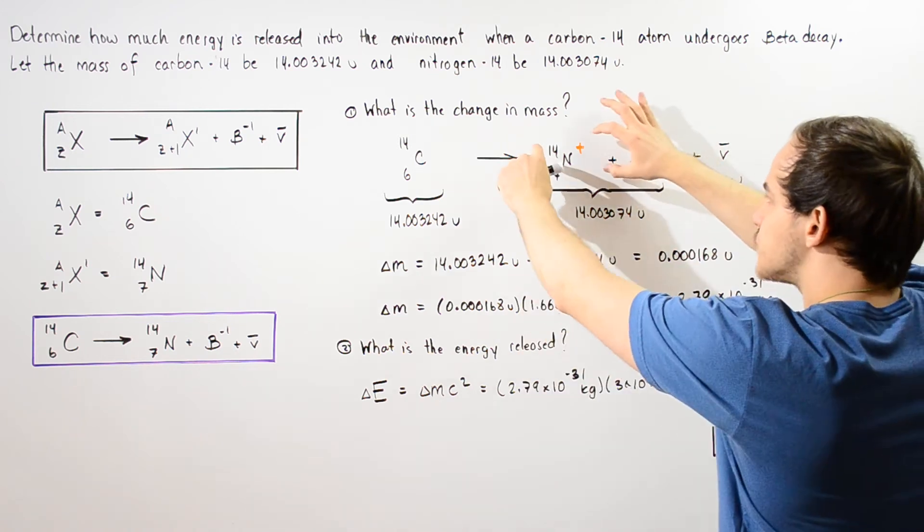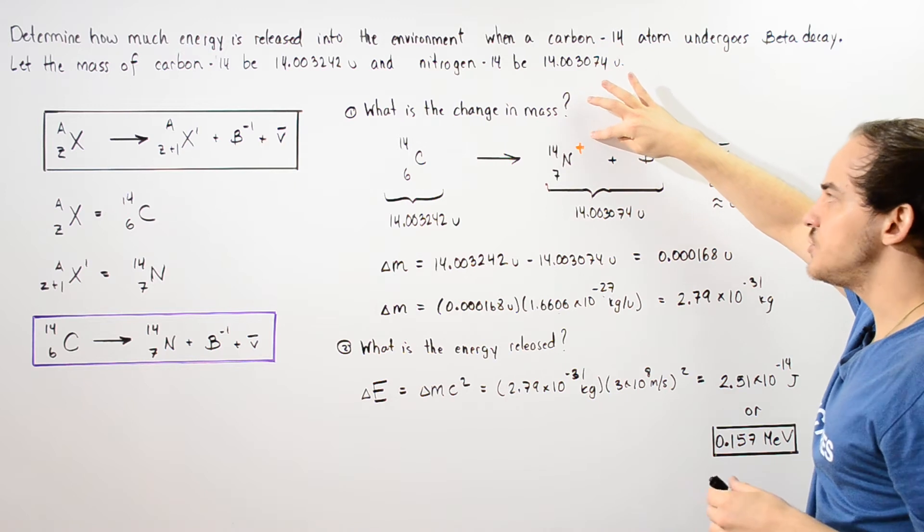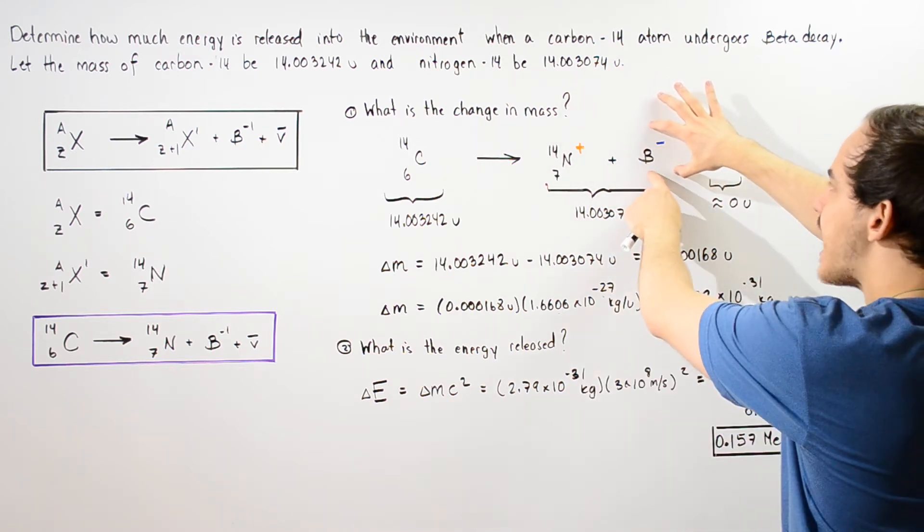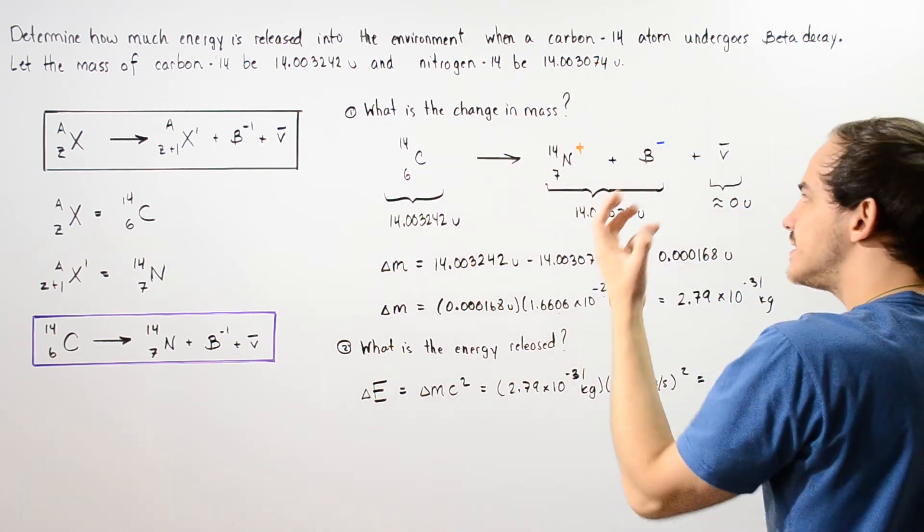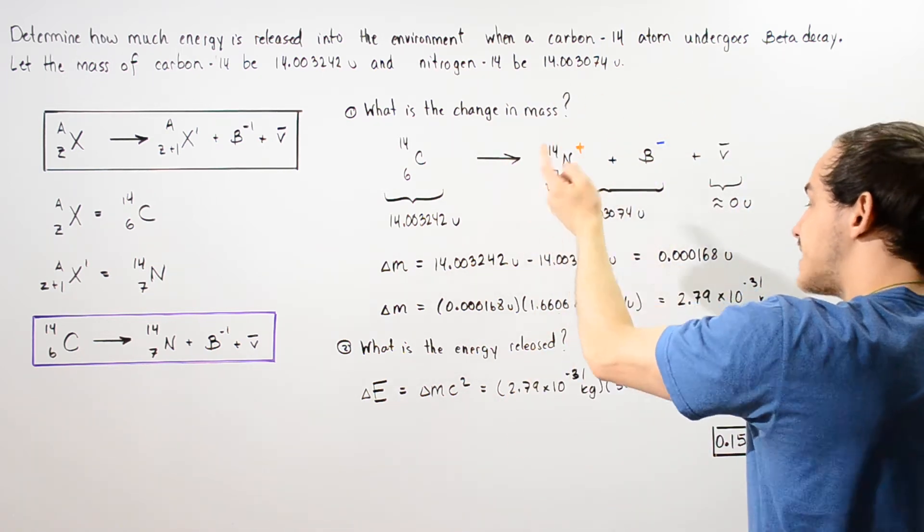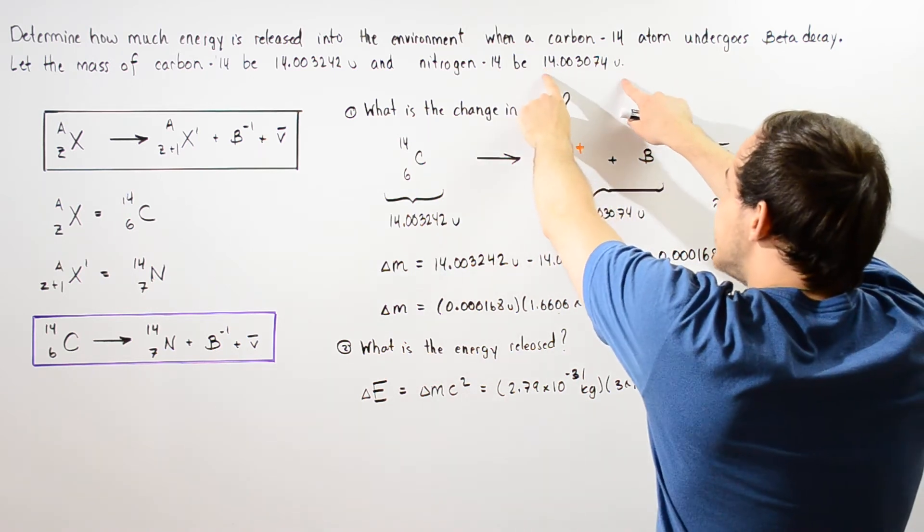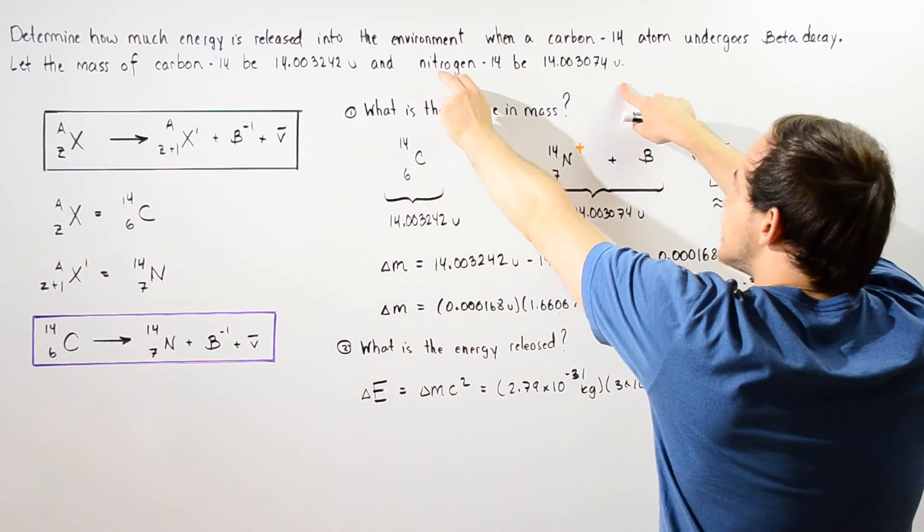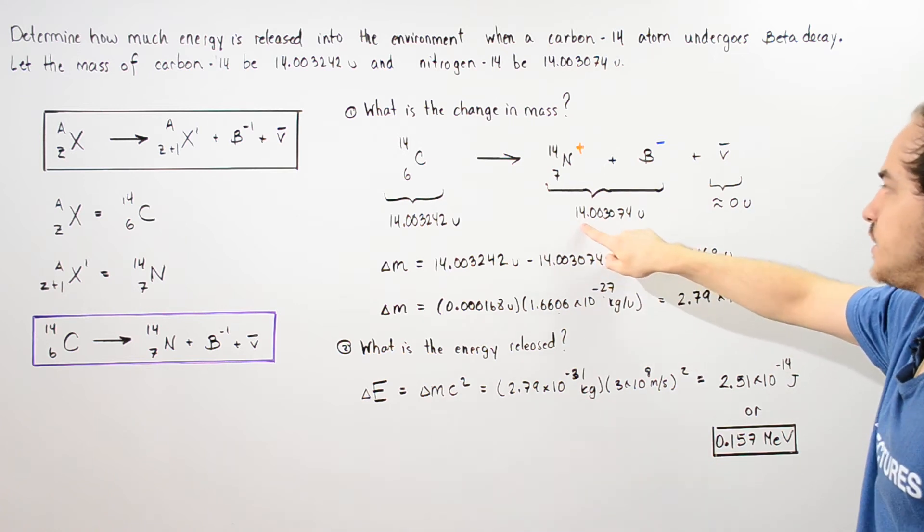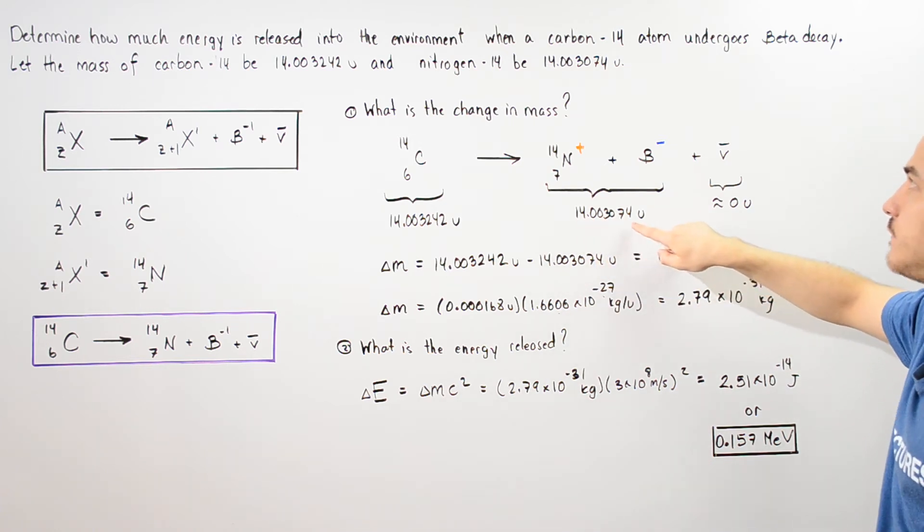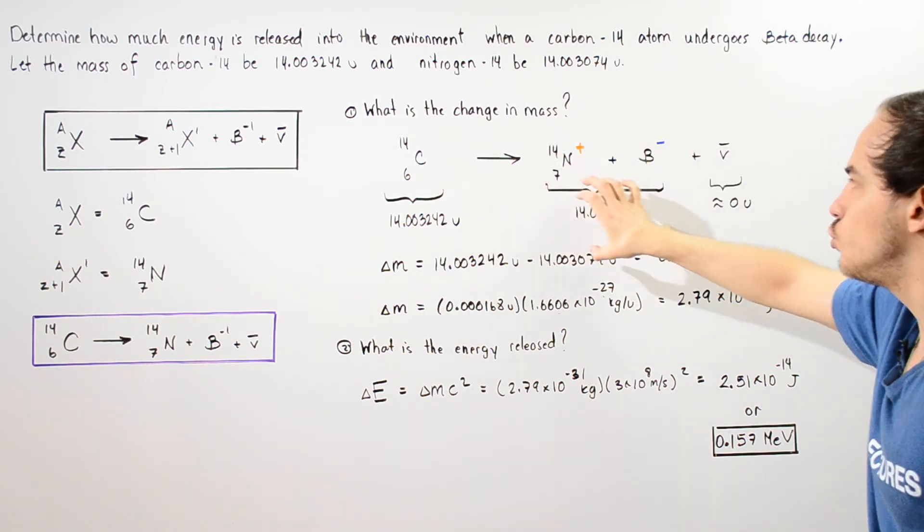So that basically means if we take this nitrogen with a positive one charge and add the quantity of mass on one electron that gives us a system that contains seven protons seven neutrons which is basically the mass of this nitrogen-14 which is assumed to be neutral. So we have 14.003074 unified atomic mass units is the mass of these two systems.